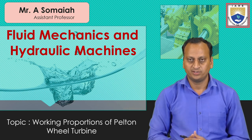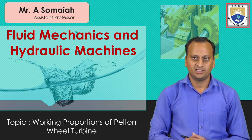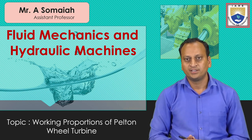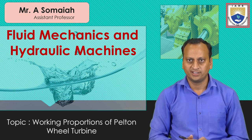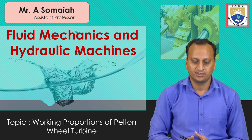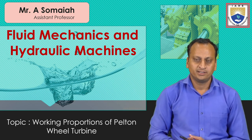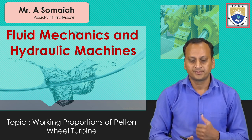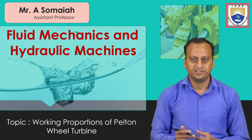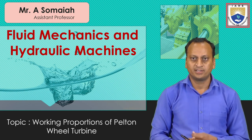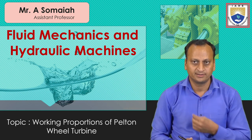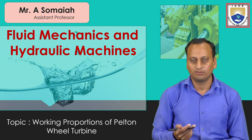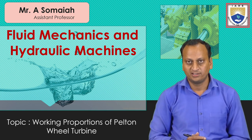In the previous classes we have gone through the introduction to the Pelton wheel turbine and how to find out the force and work done for a jet whenever it is striking at one of the tips of a curved vane. Now, based on the Pelton wheel turbine design and the shape of the bucket, we will find out the working proportions, work done, and power developed by the turbine.